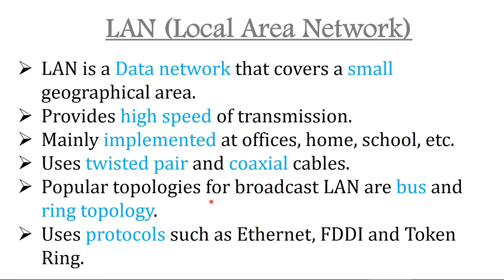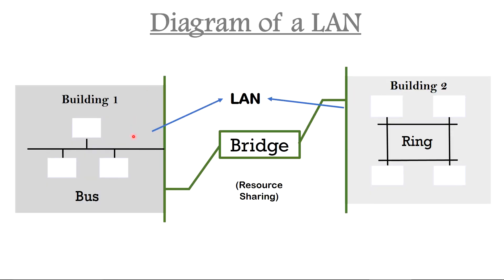The popular topologies used in LAN are bus and ring. Bus topology uses an arbitration mechanism to resolve conflicts when two or more machines want to transmit simultaneously, while in ring topology each bit propagates around on its own without any rule for arbitrating simultaneous access. The information passed over a LAN is controlled by protocols such as Ethernet, FDDI, and Token Ring. A typical LAN example shows two building segments connected by a bridge — one using bus topology and the other using ring topology.